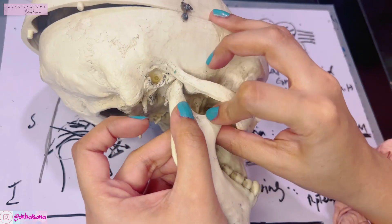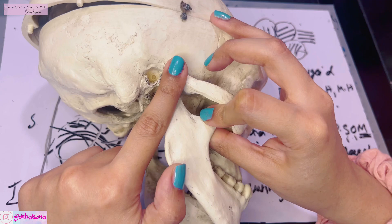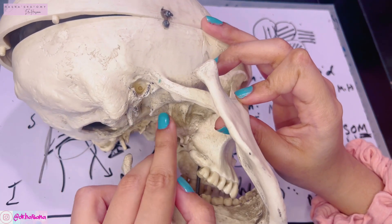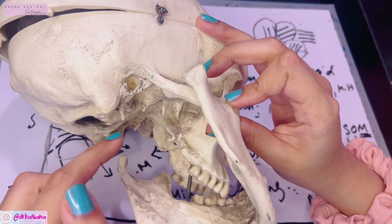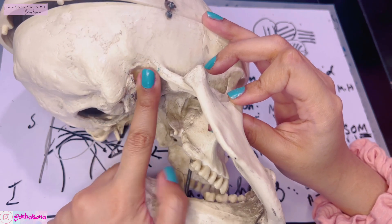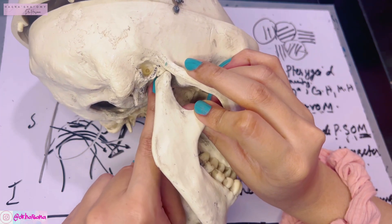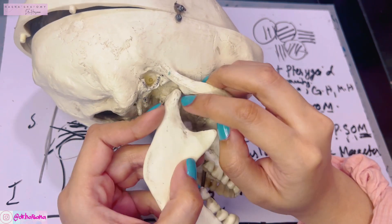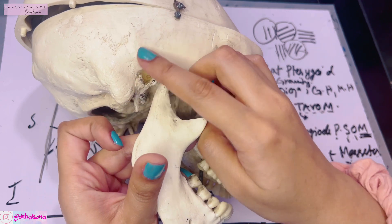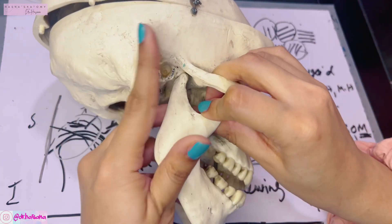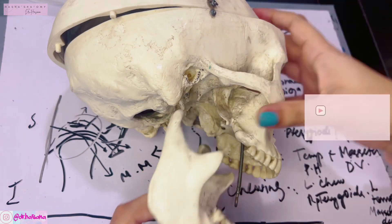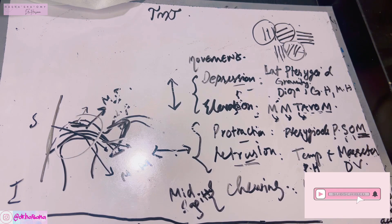Regarding the relations of the TMJ: laterally lie the parotid gland, skin, and facial nerve with its five branches. Medially are the tympanic plate — which separates the TMJ from the internal carotid artery — the sphenomandibular ligament, auriculotemporal nerve, chorda tympani nerve, and the middle meningeal artery. Anteriorly is the lateral pterygoid, plus the masseteric nerve and artery. Posteriorly is the parotid gland and superficial temporal vessels. Superiorly is the middle cranial fossa and middle meningeal vessels.